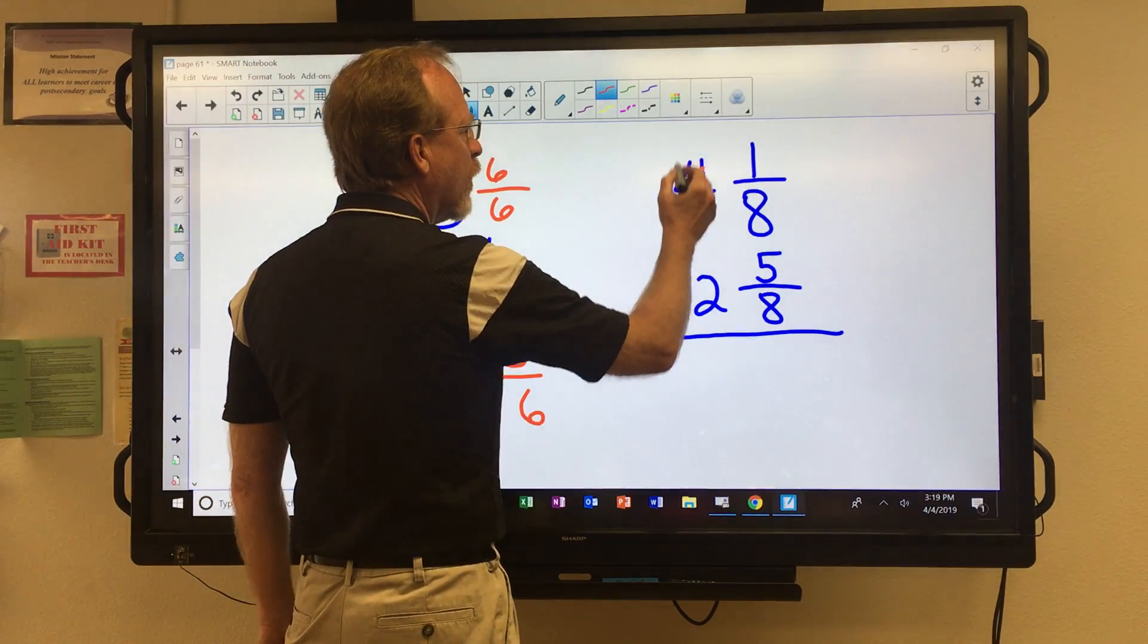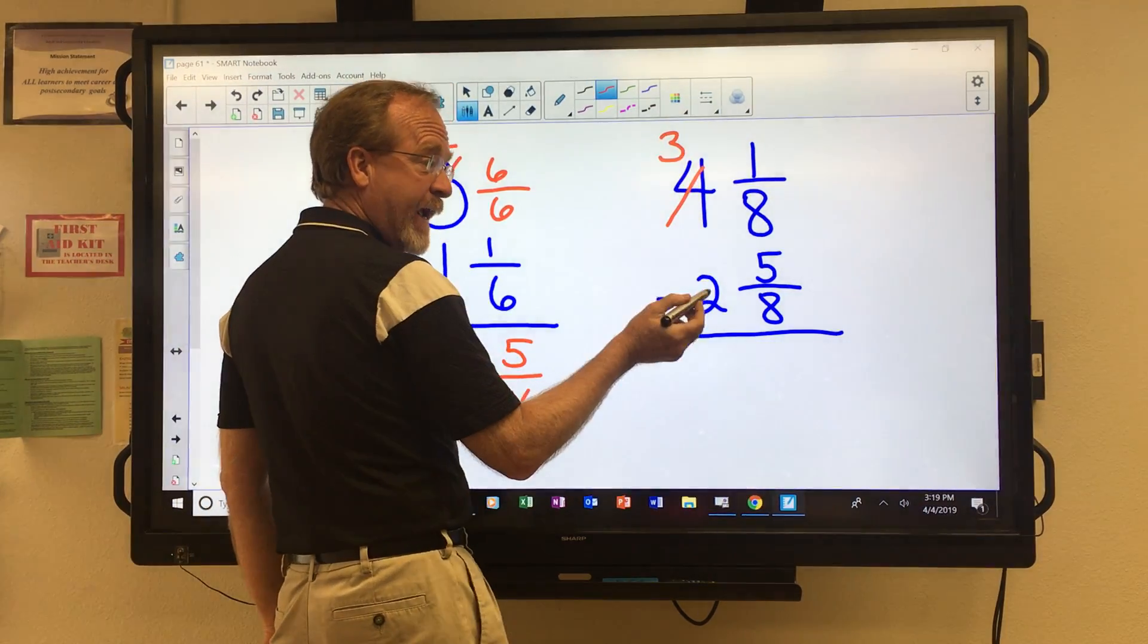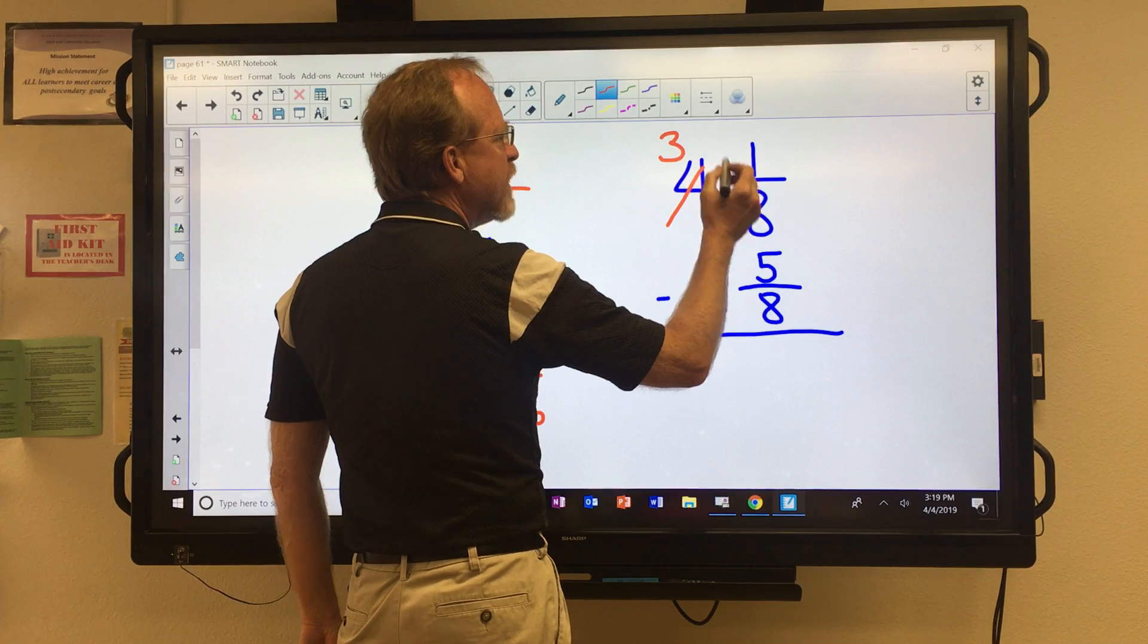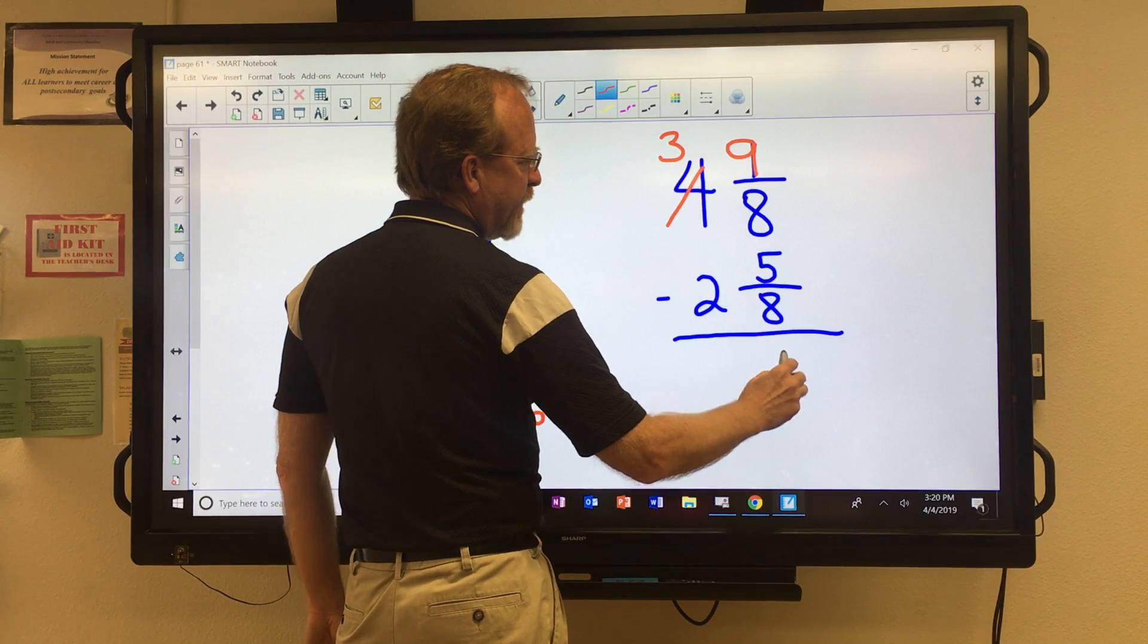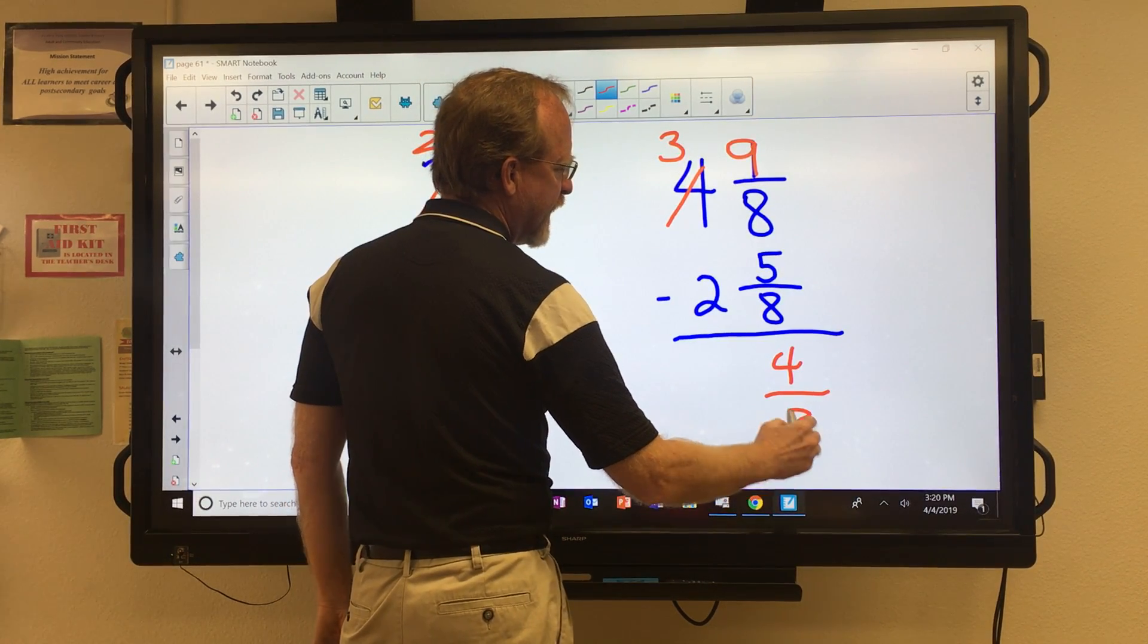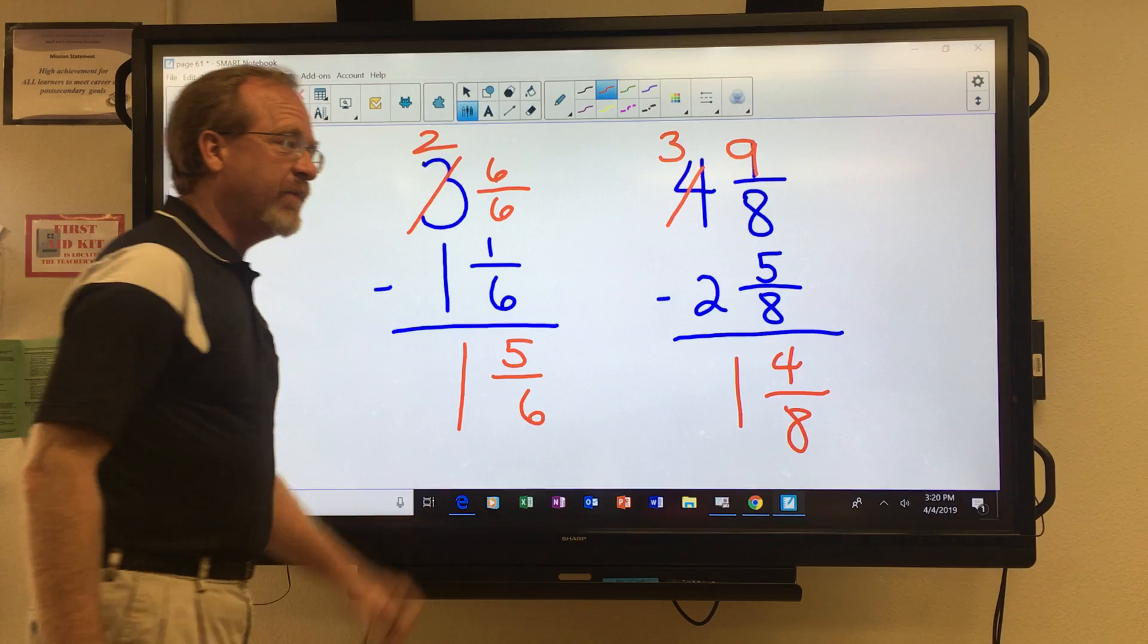Here, we'll borrow one, and that's eight over eight. So, eight over eight plus one over eight is equal to nine over eight. And, again, I think you can see how that's going to come in handy.